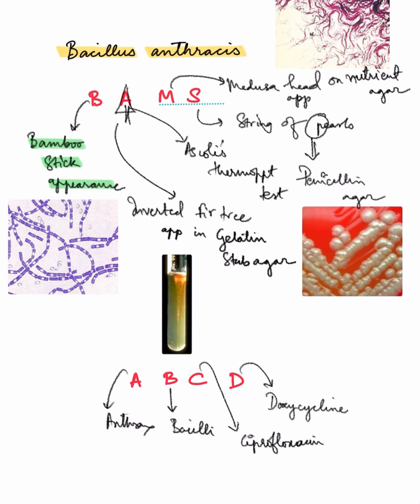A stands for two things: the first being Ascoli's thermoprecipitation test, which is a type of antigen-antibody reaction and an example of a ring precipitation test. Also, the shape of the letter A is very similar to a fir tree, so you can remember the inverted fir tree appearance in gelatin stab agar from the letter A.